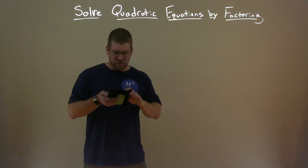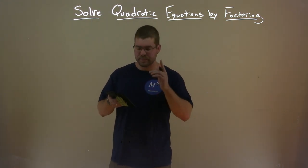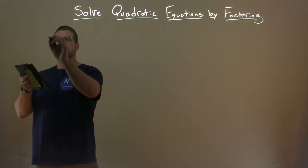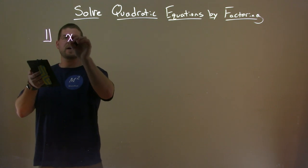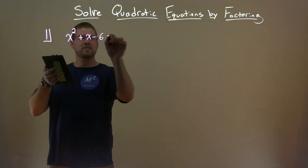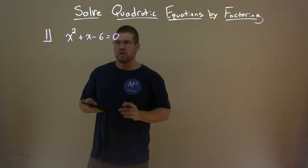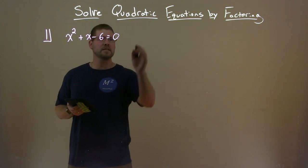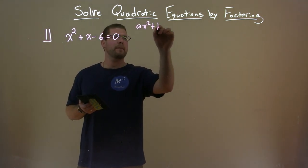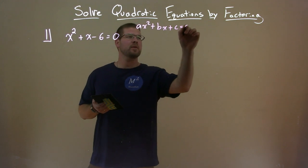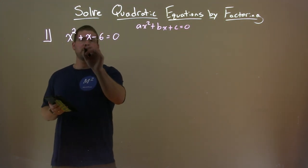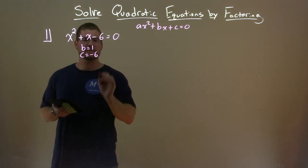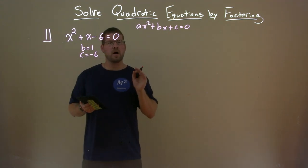Let's go with an example where we have a leading coefficient of one. We're going to solve a quadratic equation where the leading coefficient is one. Example one: x squared plus x minus six equals zero. We look at the b value and the c value. Remember, it's ax squared plus bx plus c equals zero. The b value here is one, and the c value is equal to negative six.